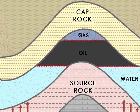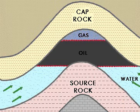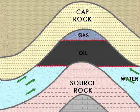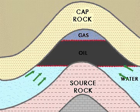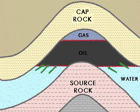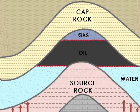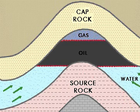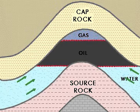During the process of accumulation of oil within the reservoir, gravity separation of water, oil, and gas takes place within the reservoir. Water being the heaviest occupies the lowest portion, oil the middle, and gas being the lightest occupies the upper parts of the pay zone.